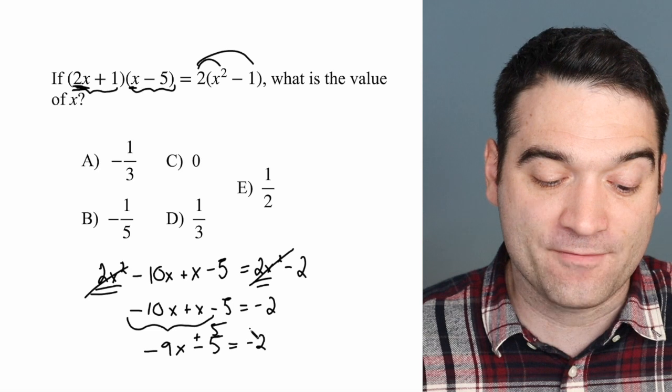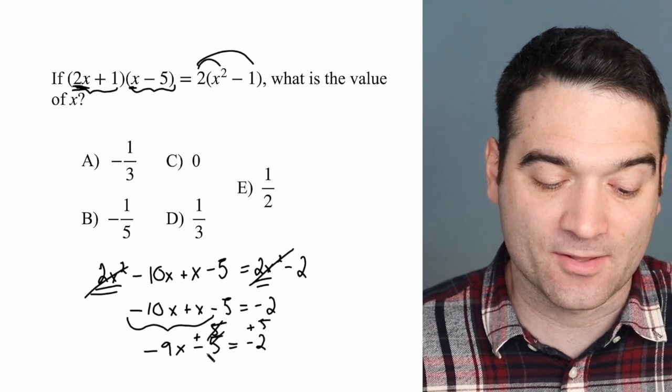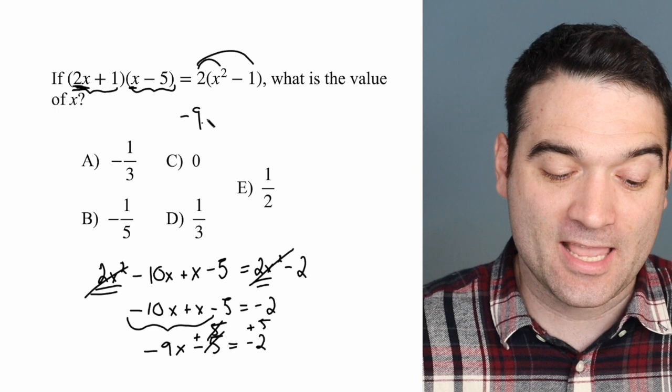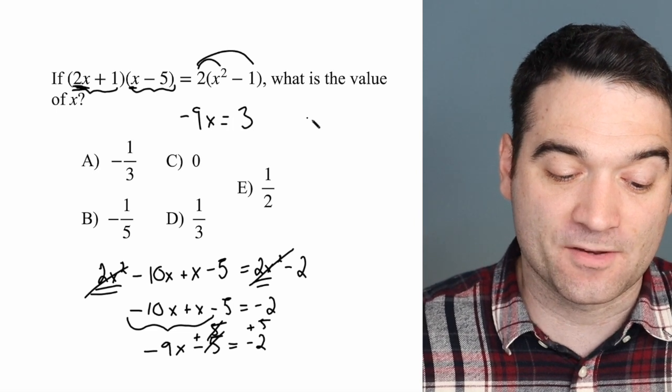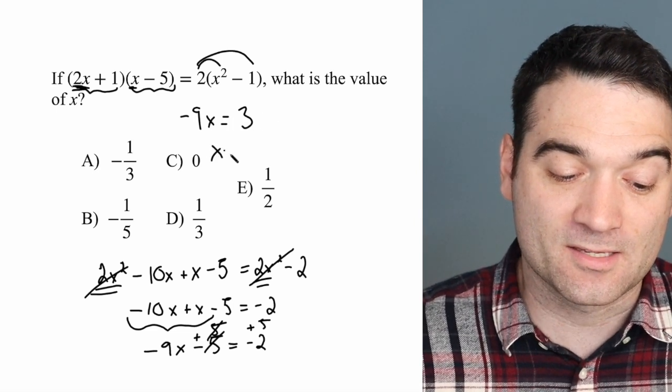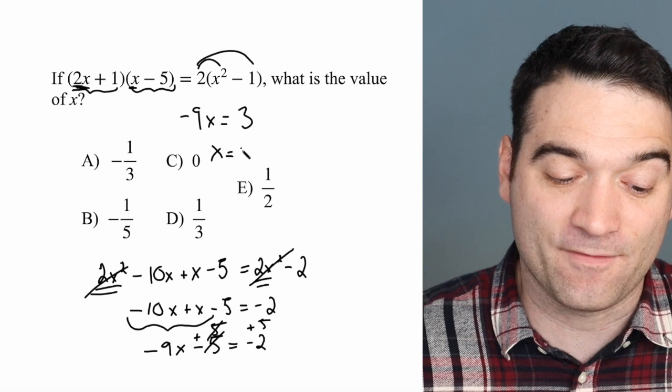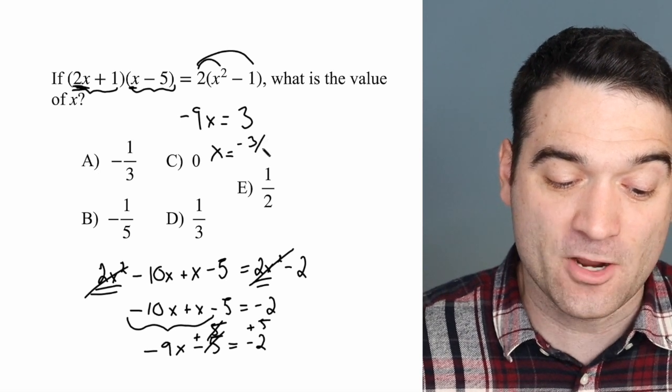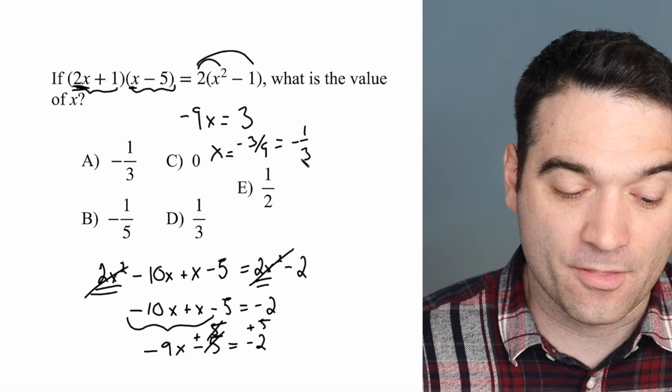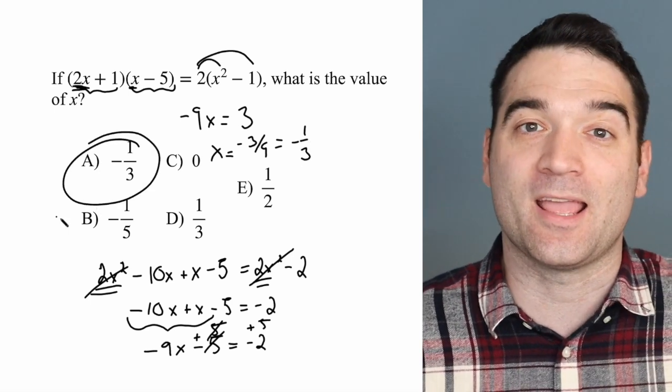We're going to add 5 to both sides like that, so that cancels out. And I get negative 9x equals positive 3. So I'm going to divide both sides by negative 9 and find that x equals negative 3 over 9 or negative 1 third, which is answer option A.